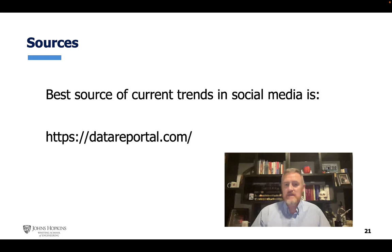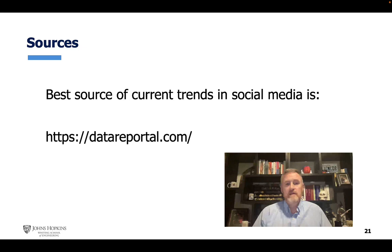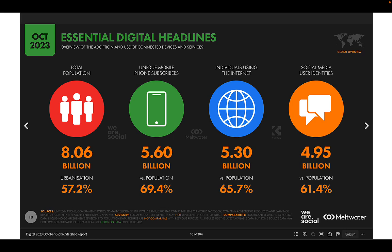The site that I think is probably one of the best to access common trends is datareportal.com. It tends to give you recent updates — they do quarterly updates on some of these. I'll update it once a year at the beginning of the year for each course, but please go for a refresh if you're curious. They also have historic data so you can see change. There are about 300-plus slides available on the website; these are the ones I find most interesting.